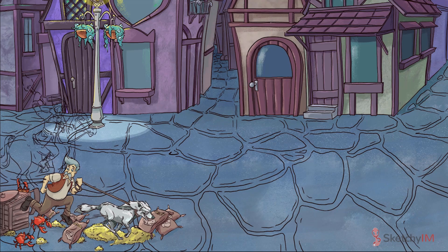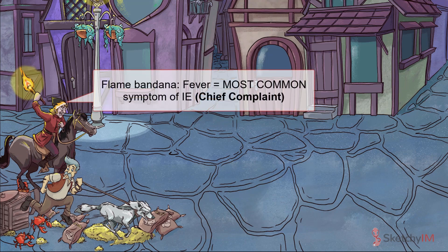Fever, represented by the recurring Sketchy symbol the flame bandana, is the most common symptom of IE. Fever and an infectious process — I know, mind-blowing. In addition to fever, many of the other clinical manifestations of IE depend on the time frame of the infection, so make sure to pay attention to how long your patient's symptoms have been going on. Infective endocarditis can be classified as acute or subacute.